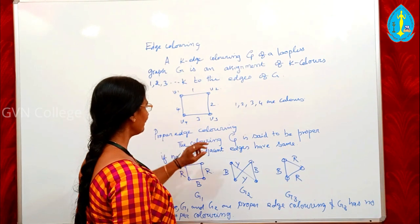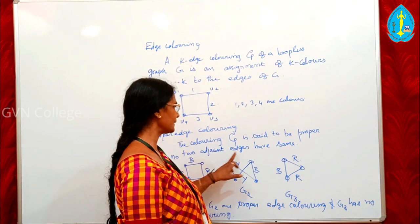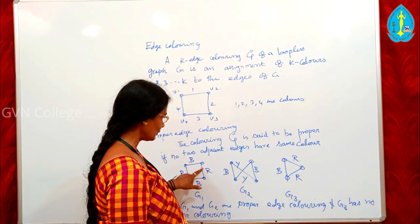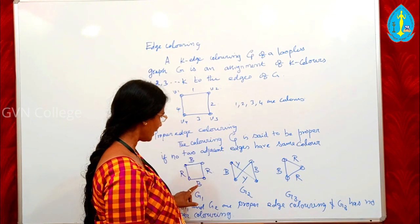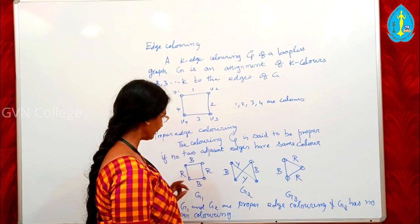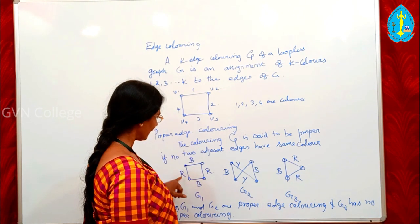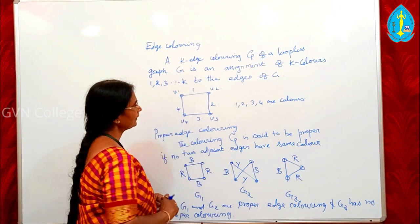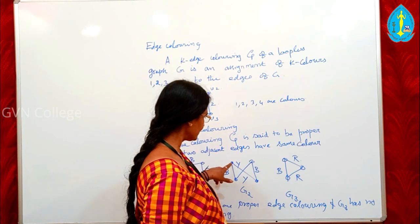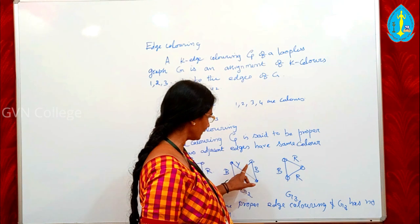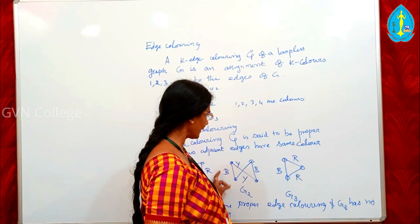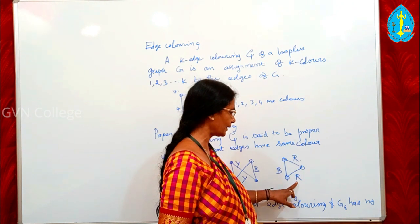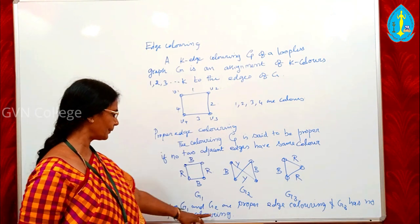Proper edge colouring means the colouring tau is said to be proper if no two adjacent edges have the same colour. In figure G1, adjacent edges have different colours — black and red — so it is a proper edge colouring. In G2, all adjacent pairs also have proper edge colouring. But in G3, two adjacent edges receive the same colour, therefore G3 has no proper edge colouring.